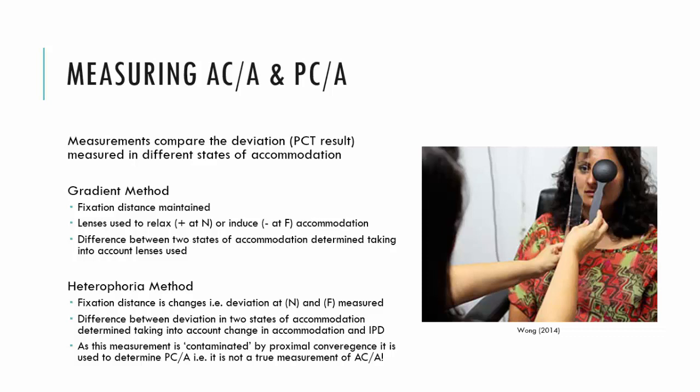For the heterophoria method, we are simply changing distance. We compare the patient's angle of deviation or PCT result in the distance, where they are accommodating less, versus their PCT result when fixing at a near target at a third of a metre, where they are doing three diopters of accommodation. So in the heterophoria method, there is a change in accommodation due to a change in distance, versus in the gradient method, where the change in accommodation is due to the lenses.